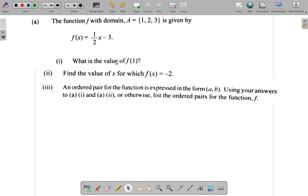What is the value of f of 1? Now notice what it says is that f of x is equal to half x minus 3, which means half times x minus 3. Now you want f of 1. What does that mean? Instead of f of x, it's f of 1.